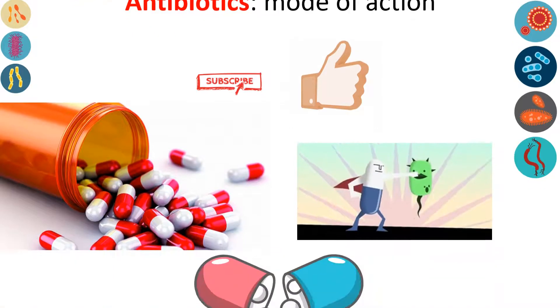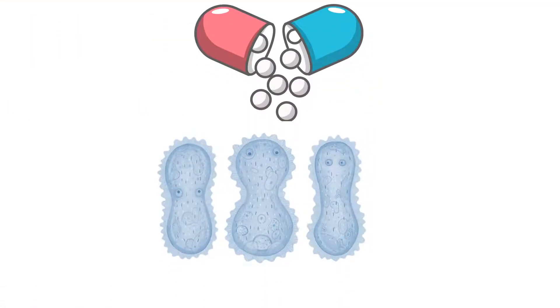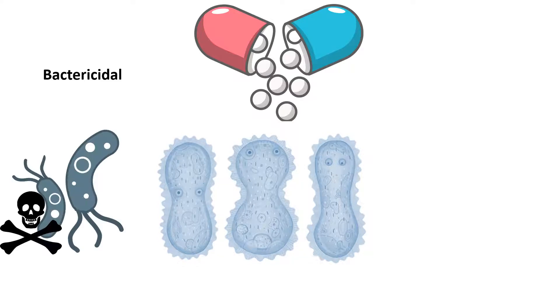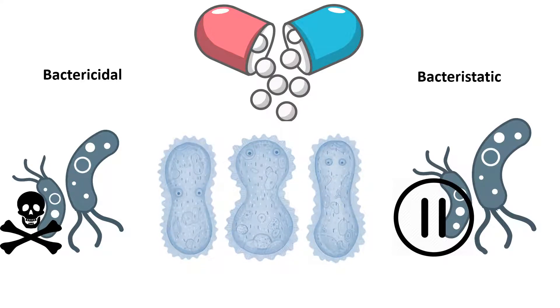Antibiotics could have two broad modes of action. One is bactericidal—that means it is killing the bacteria—and the other is bacteriostatic. Bacteriostatic means pausing the growth of the bacteria, in other words, interfering with several metabolic and physiological aspects of bacteria.